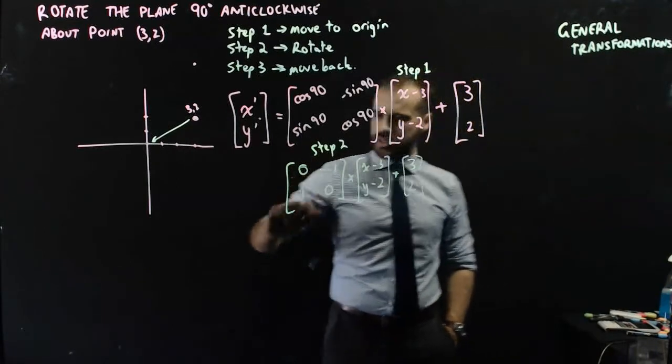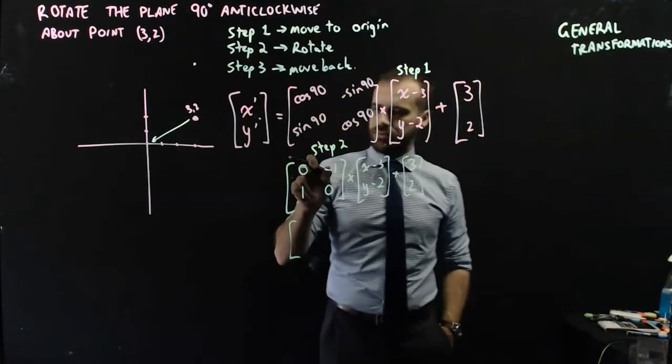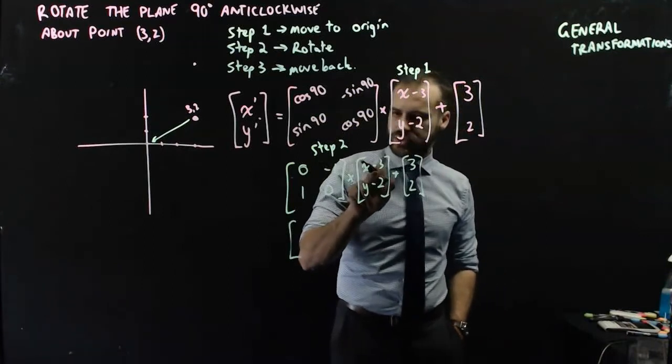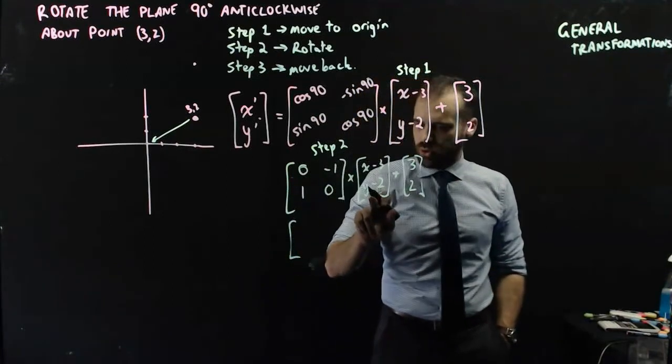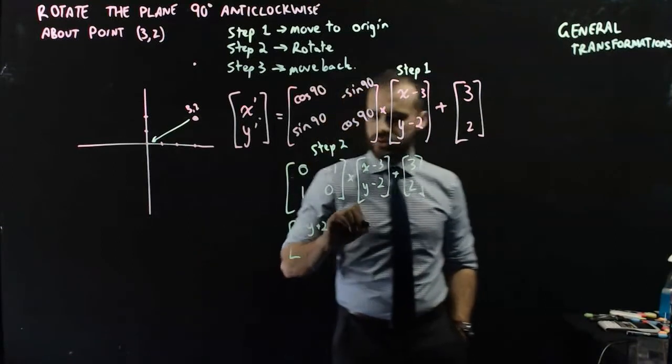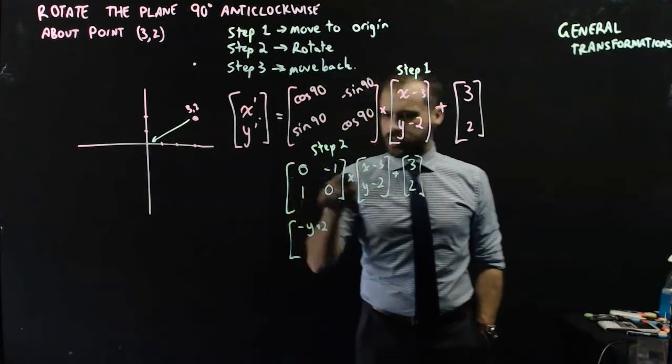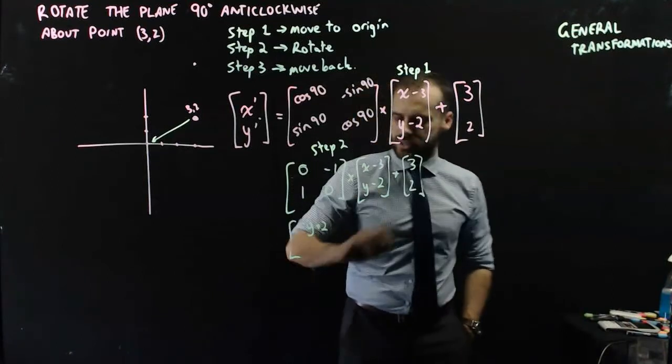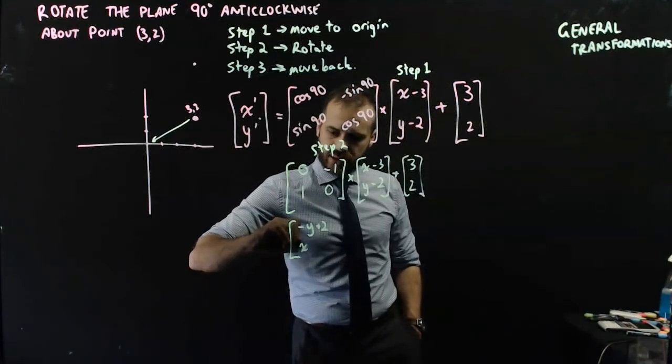Oh, let's do it together. It's going to be 0 times x minus 3, negative 1 times y minus 2. So that's going to be negative y plus 2. And it's going to be 1 times x minus 3, 0 times that. So it's going to be x minus 3 there.